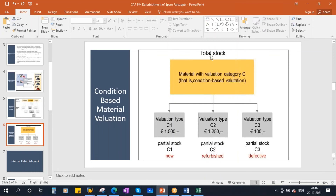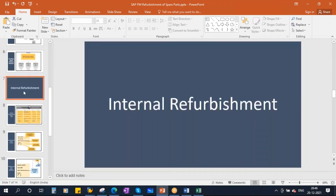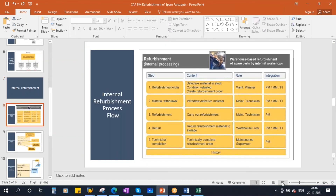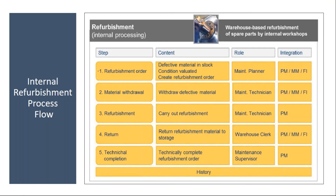When you do that, the value of the material will change — I will show you that in the system. This is condition-based material valuation. Now we will start with the internal refurbishment. The process is: first create a refurbishment order, then do material withdrawal — take the defective material from the warehouse — then carry out the repair, then return the refurbished material back to the warehouse, and finally do the technical completion.